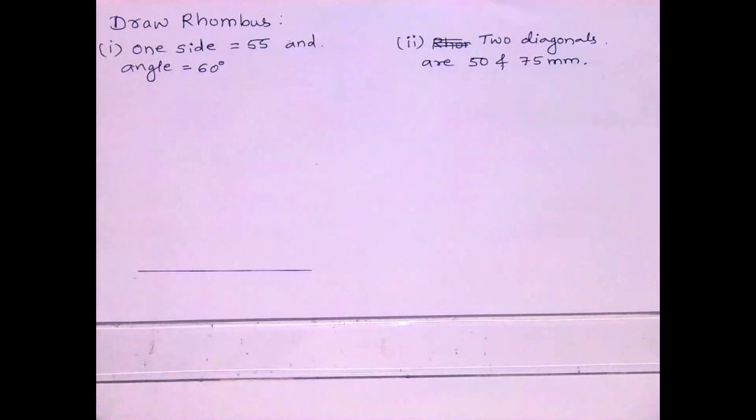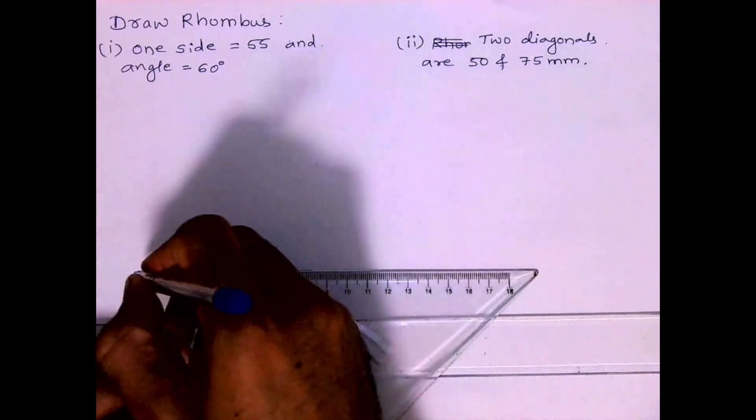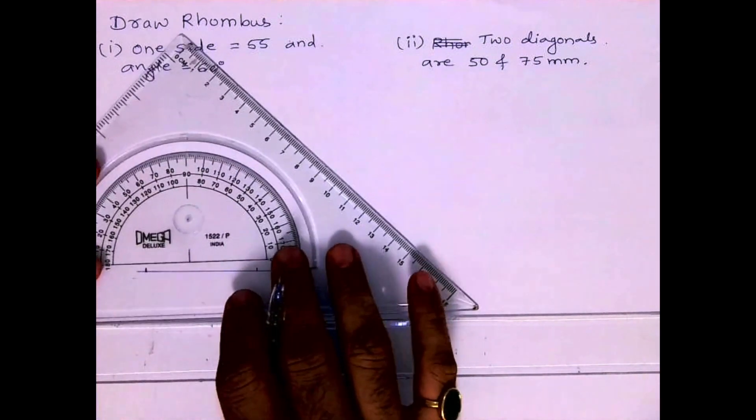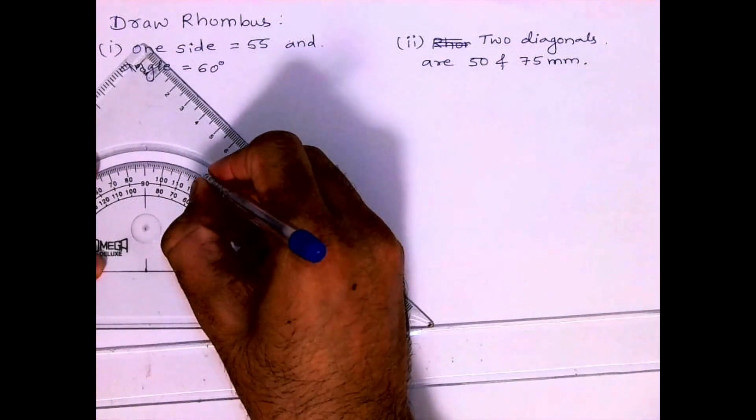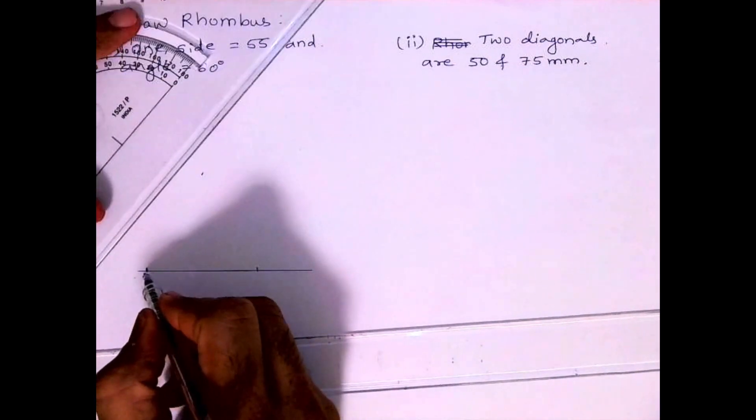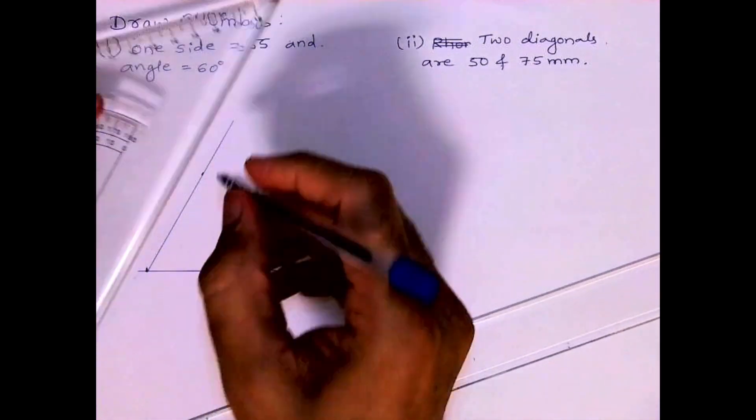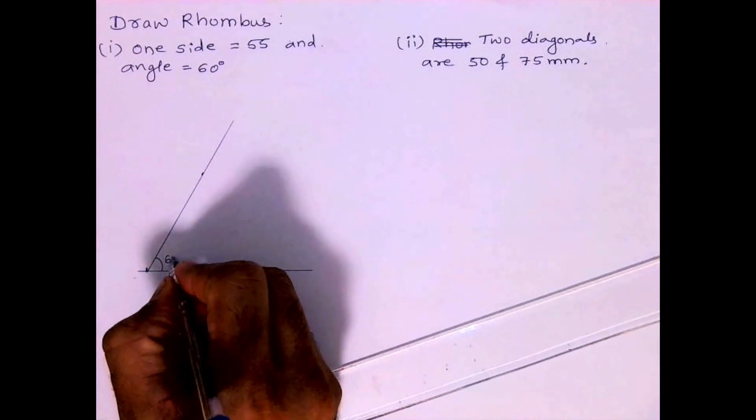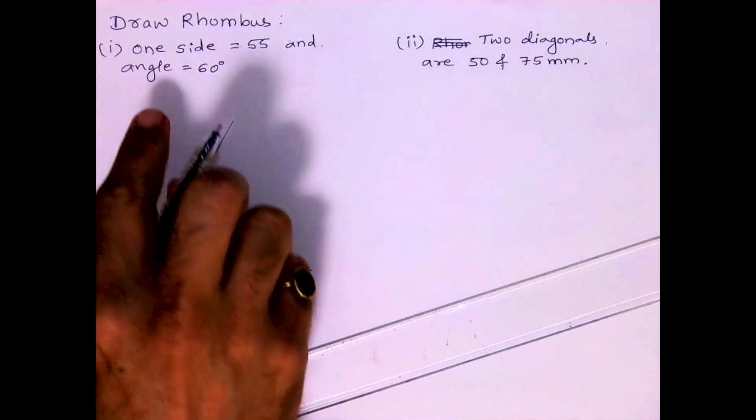Now all of you know in a rhombus all sides are the same, so all sides will be 55mm. They've given one angle 60 degrees, so we'll mark 60 degrees. First I will mark 55 and then 60 degrees. See, this is A and B is 55mm.